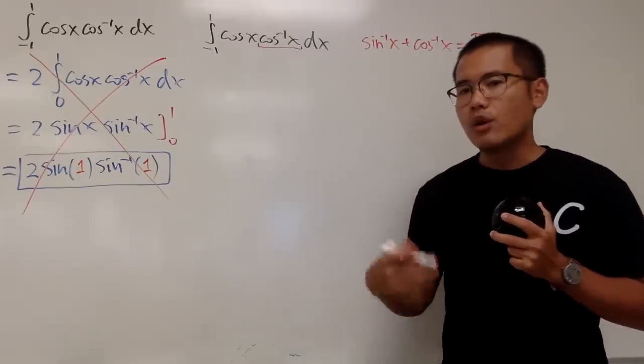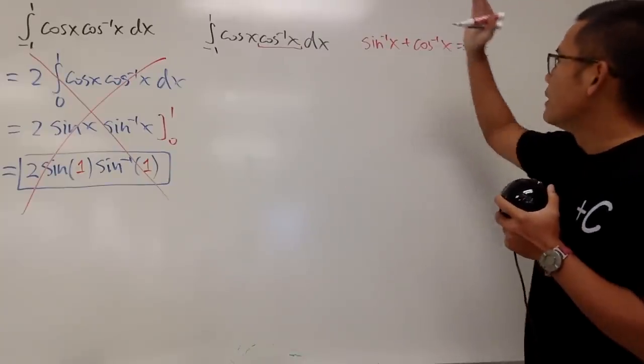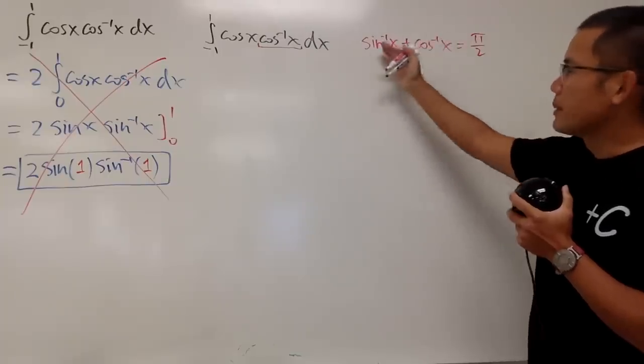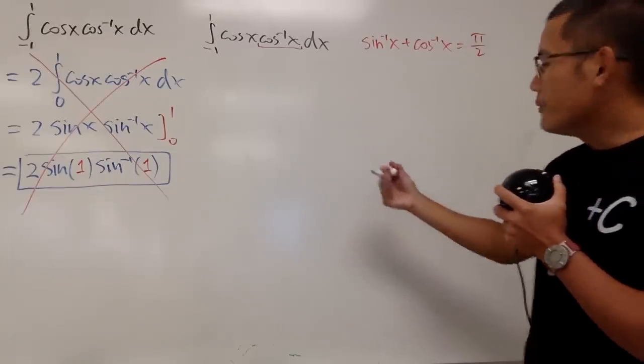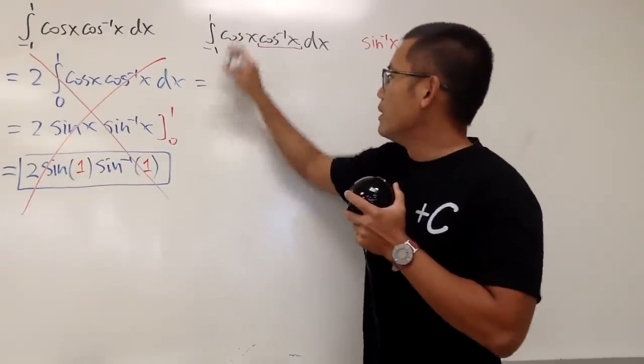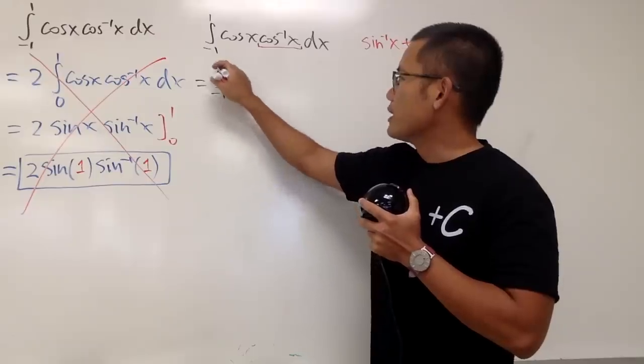Right? The co-functions stands for complementary, so when you have sin and cos, if you are talking about the inverse and the inputs are the same, they will add up to π over 2. Well, let's take a look.